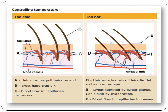In the overheating process, viso-dilation has three steps — D, E, and F. In step D, hair muscles relax and hair lies flat so heat can escape. In step E, sweat is secreted by the sweat glands, cooling the skin by evaporation. In step F, blood flow in capillaries is increased. For over-cooling (viso-constriction), steps A, B, and C apply: in step A, hair muscles pull hair on end; in step B, erect hair traps air; in step C, blood flow in capillaries is decreased.